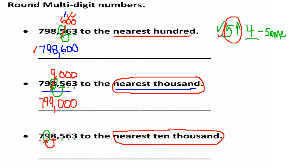The digit in the thousands place is 8, so we're going to round the ten thousands digit up by one. That 9 becomes 10 — just like when we add — so that digit turns to zero and we carry one more to the hundred thousands place, which becomes 8.